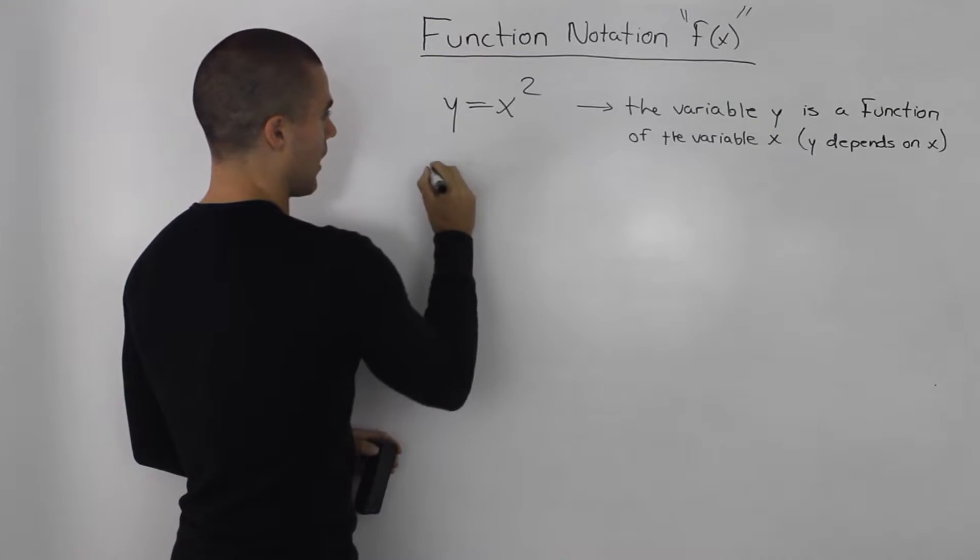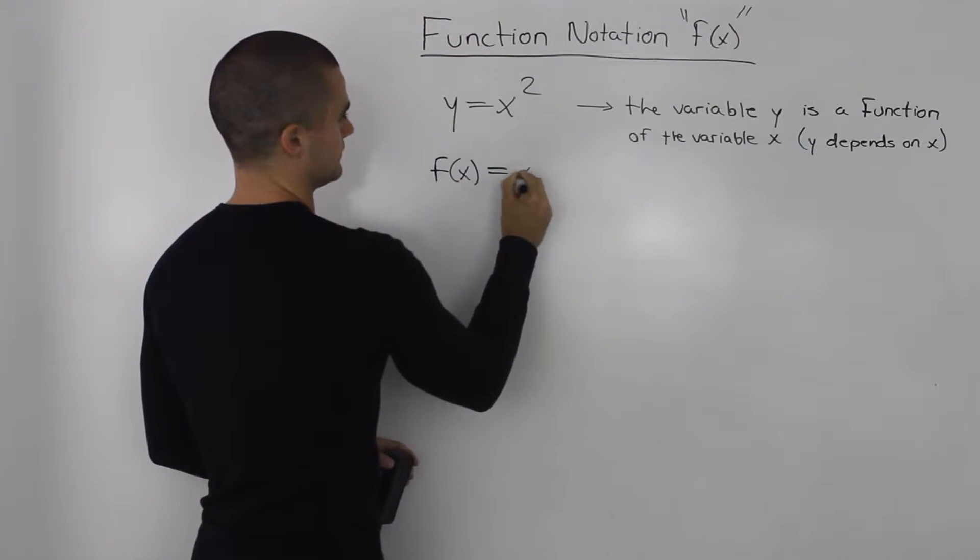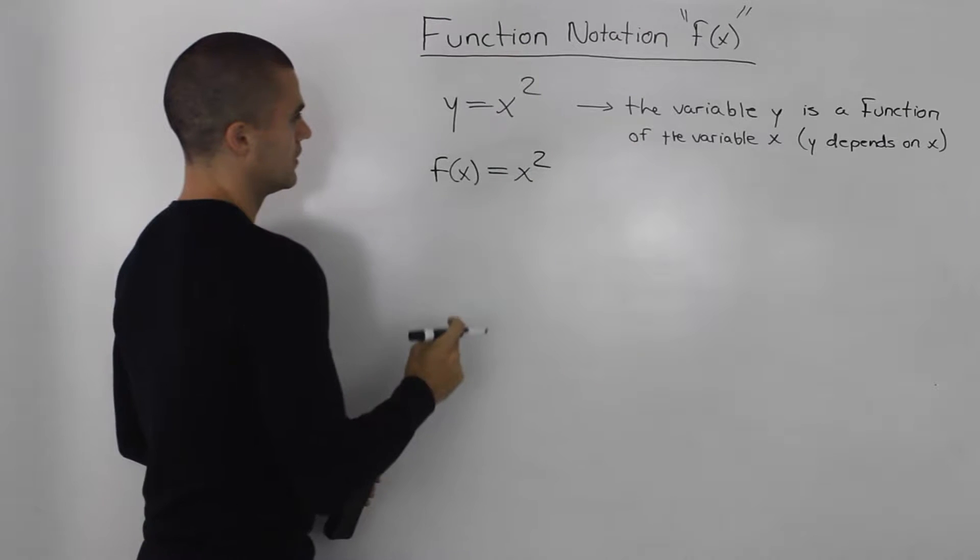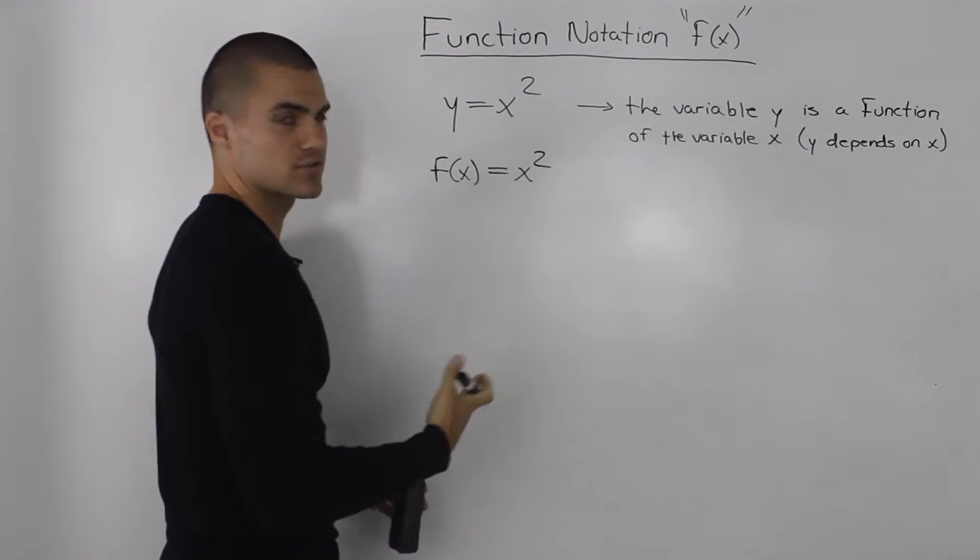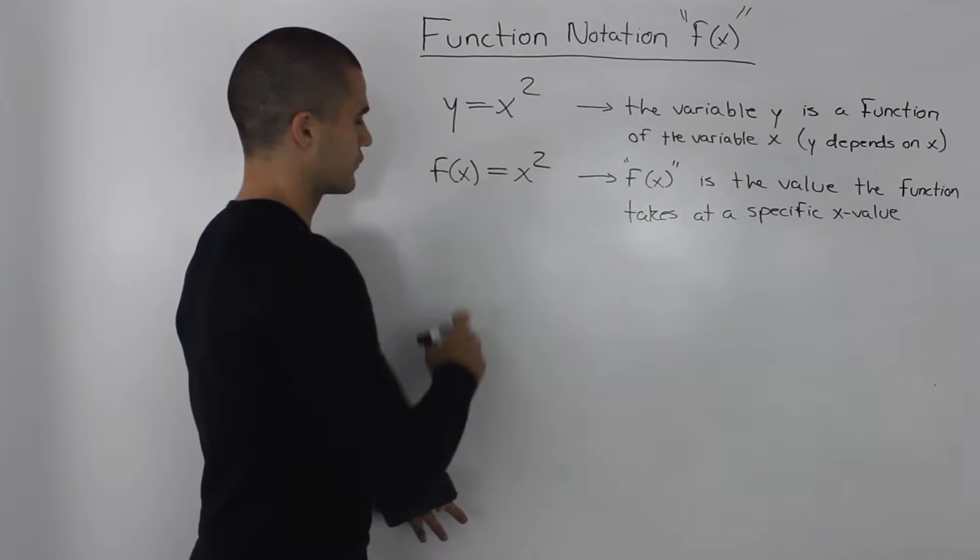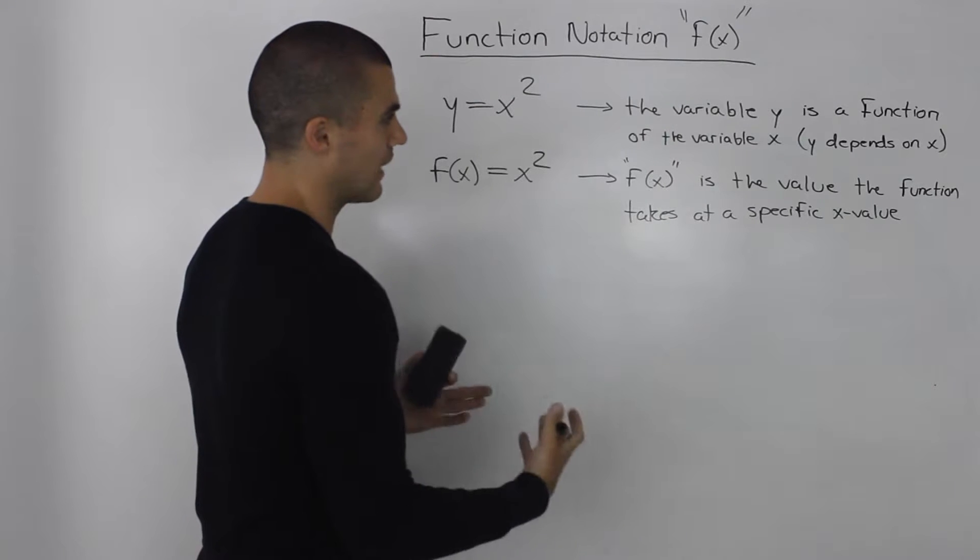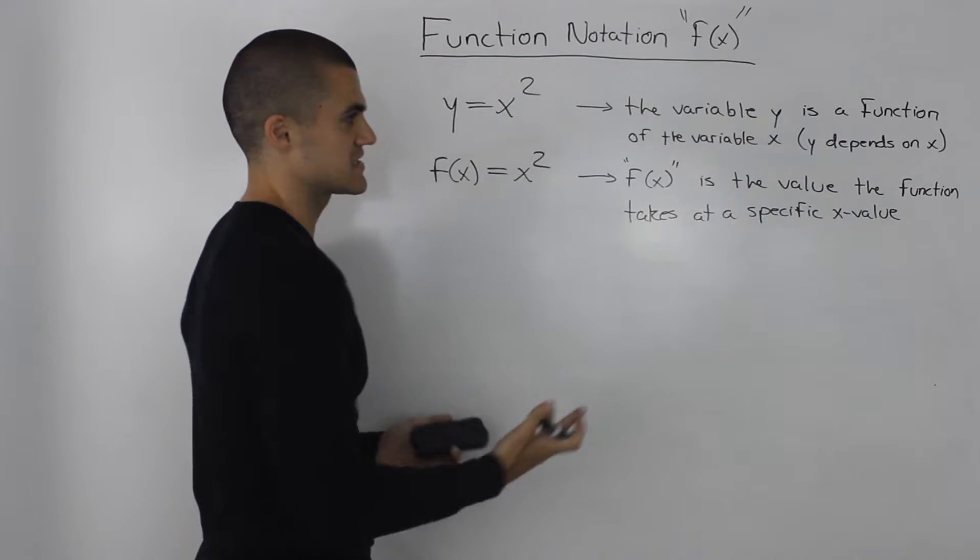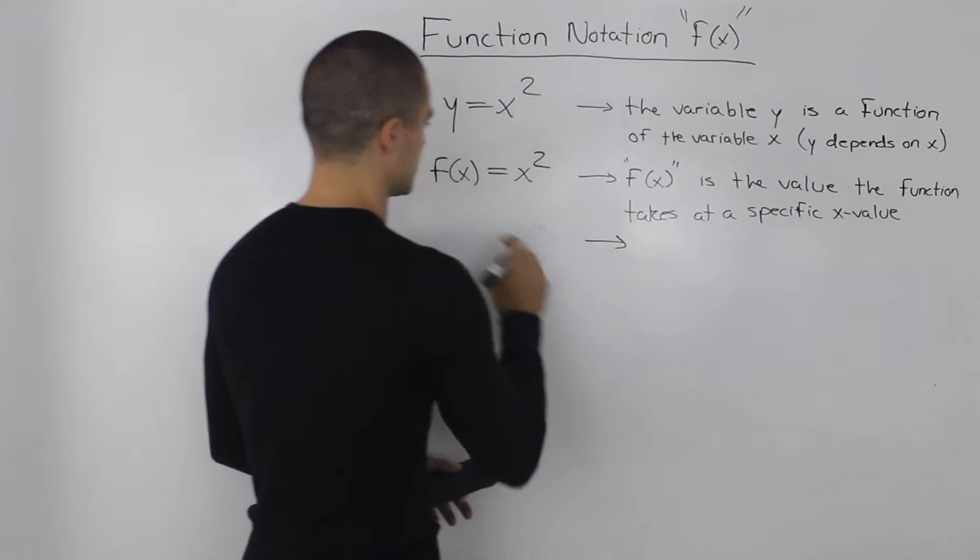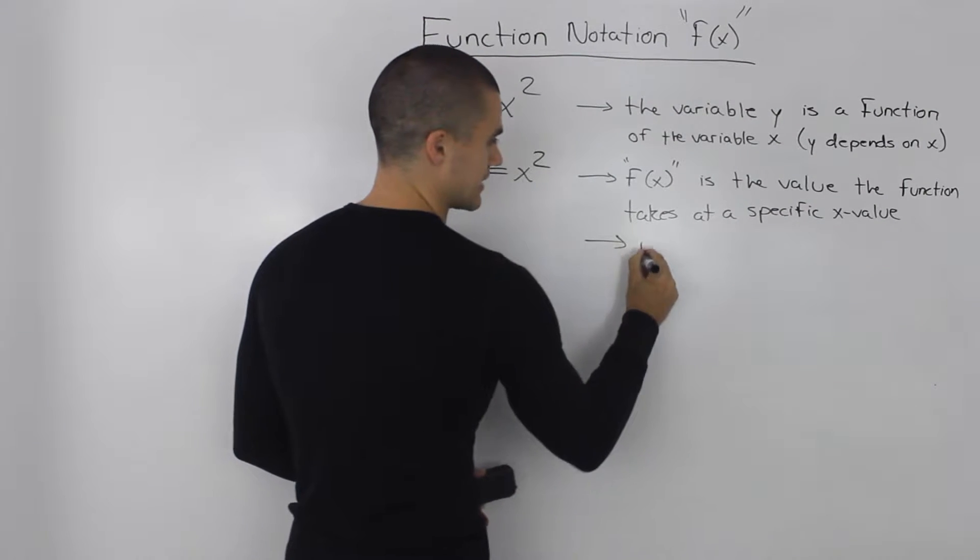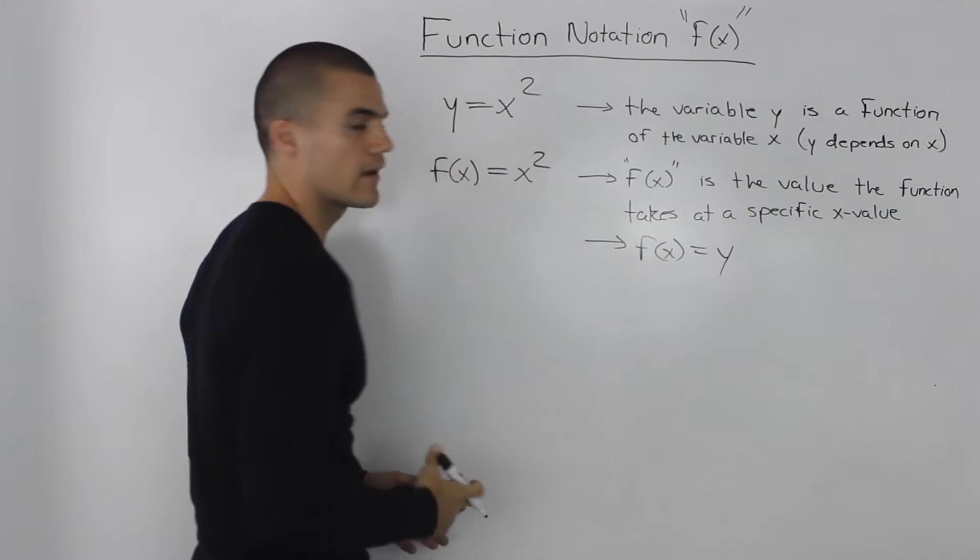Now another way that we can write y is with this notation f of x. So instead of writing y equals x squared we could write f of x equals x squared. Now if we're supposed to give a proper definition for f of x, f of x is basically the value the function takes at a specific x value. And honestly the easiest way to just remember what this means is that f of x is equal to y. It's just another way of writing y.